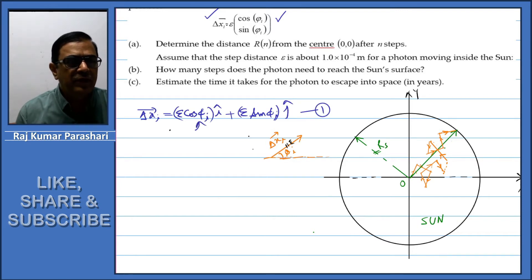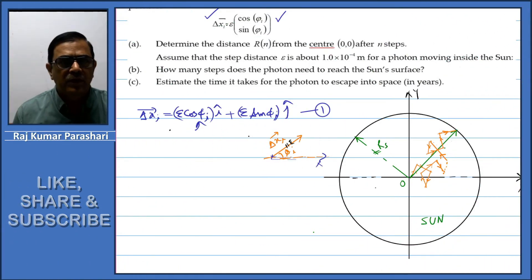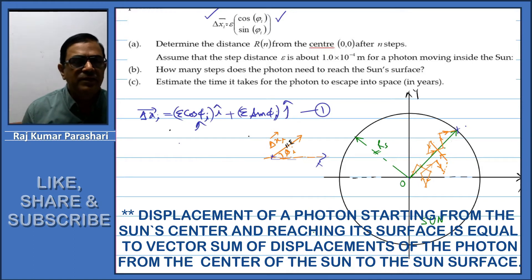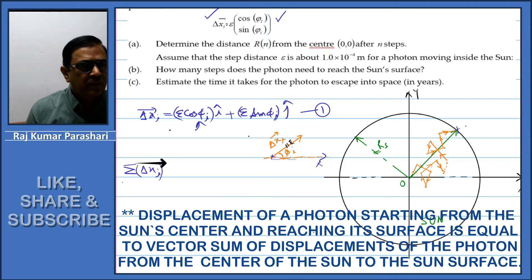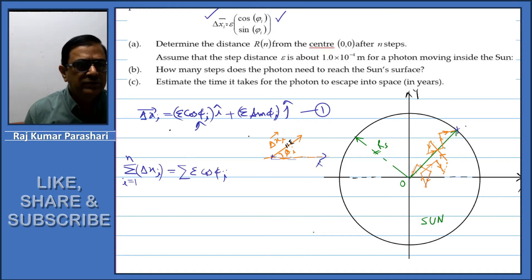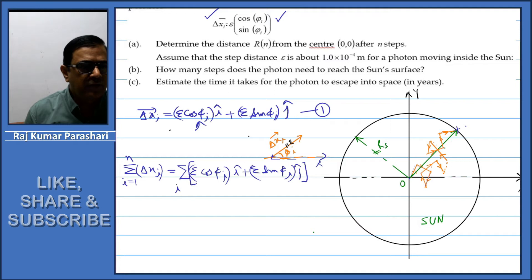Here φi happens to be the angle made by the displacement vector with respect to the x-axis. Now the displacement of the photon starting from the center and reaching the Sun's surface should be given by the vector sum of the displacements. Thus, summation of ΔXi from 1 to n — where n is the total number of interactions or total number of steps. This equals the summation of ε·cos(φi)·î plus ε·sin(φi)·ĵ, where i runs from 1 to n.